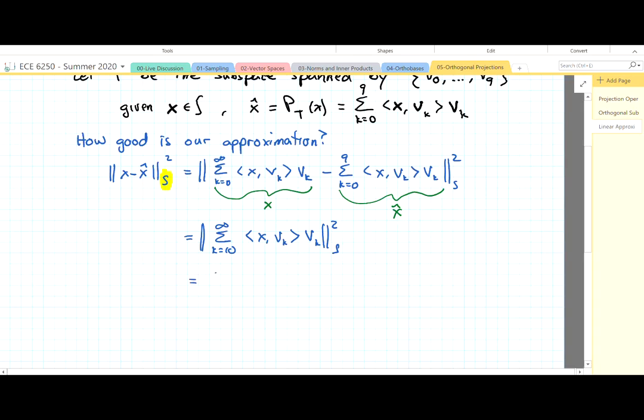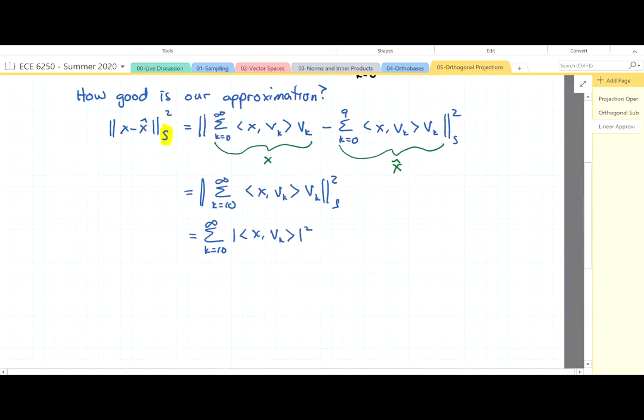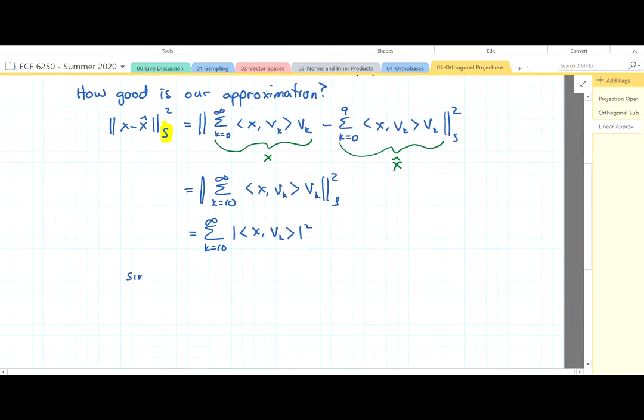Well, because we have an orthobasis, this is just equal to... So where did that come from? That's essentially from Parseval's theorem. So what is it telling us? Let me finish writing and then I'll suggest what it's telling us.